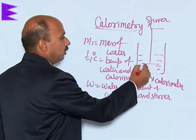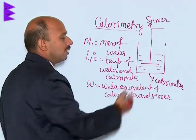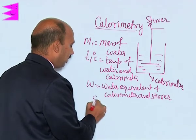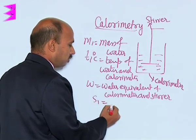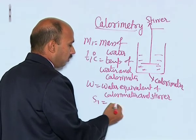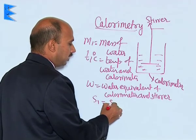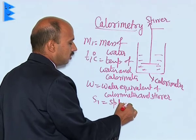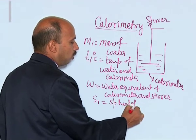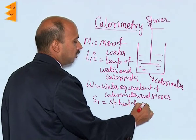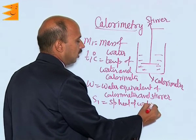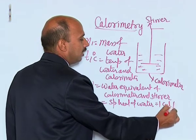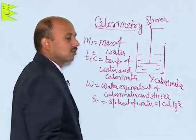We know water has a specific heat of 1 calorie. So we can write S1, the specific heat of water, is equal to 1 calorie per gram degree Celsius.